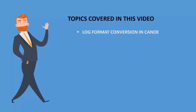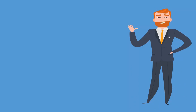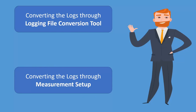For that, you don't need to search for external tools. With the KANU tool itself, you can get this job done in a very easy way. There are two ways to convert the log files from one format to another format in KANU. The first method is converting the logs through the logging file conversion tool, and the second method is converting the logs through measurement setup. Let us look at the methods one by one.